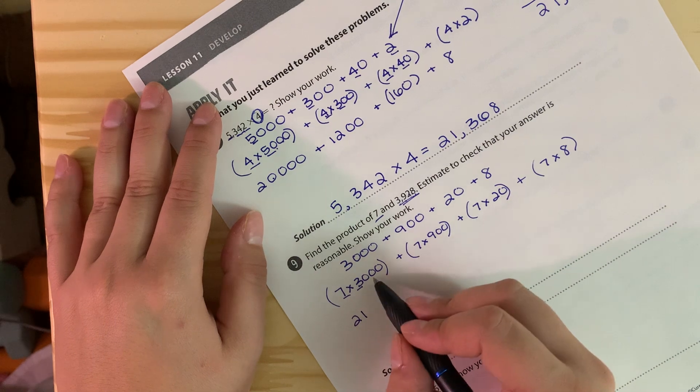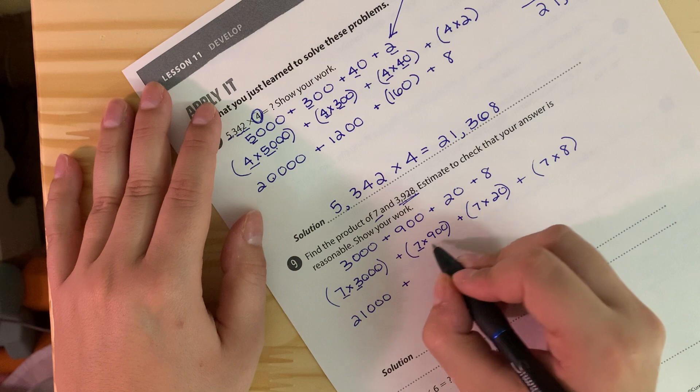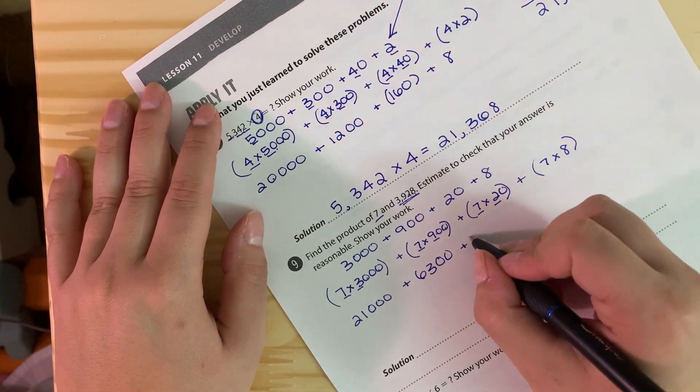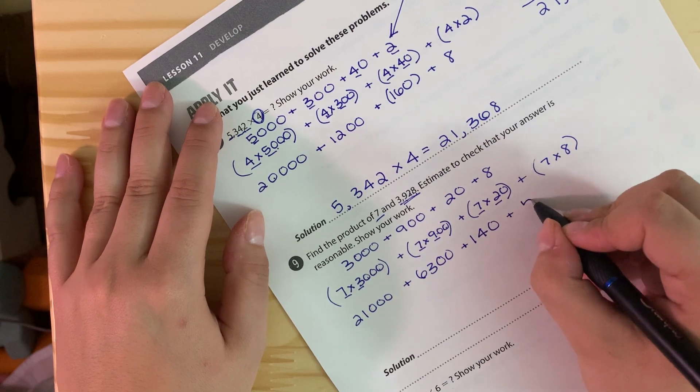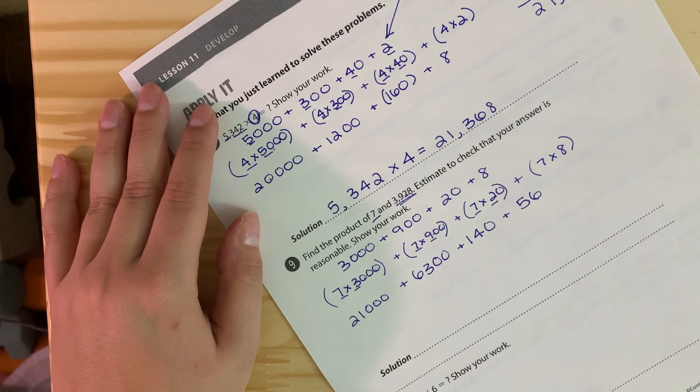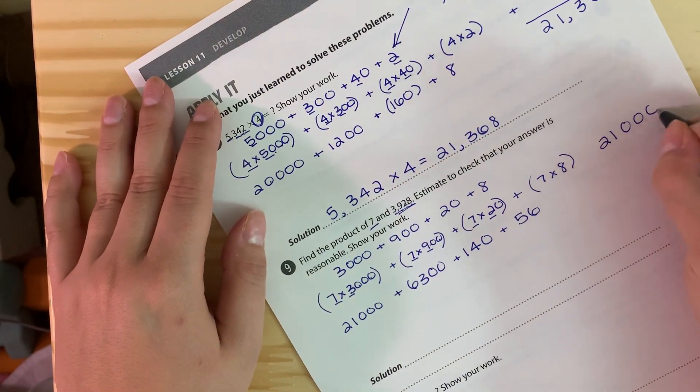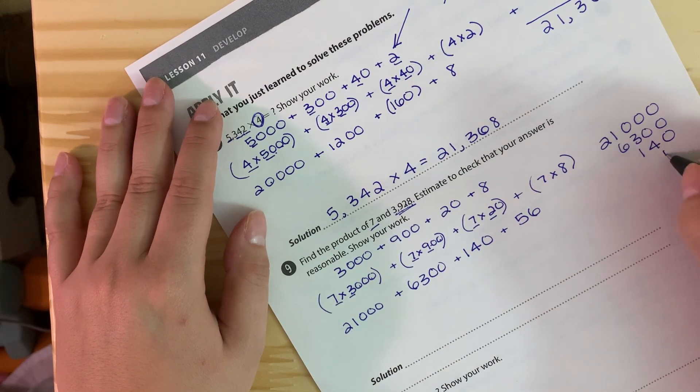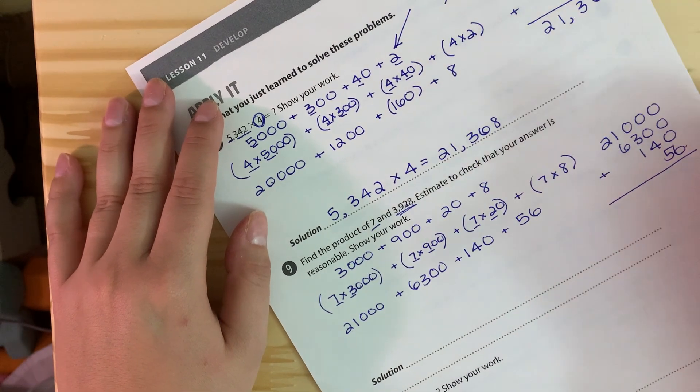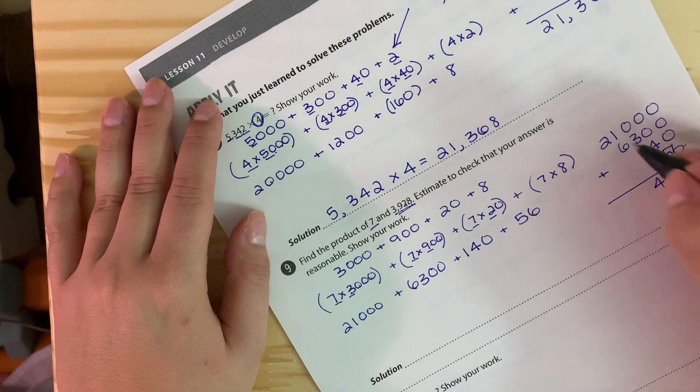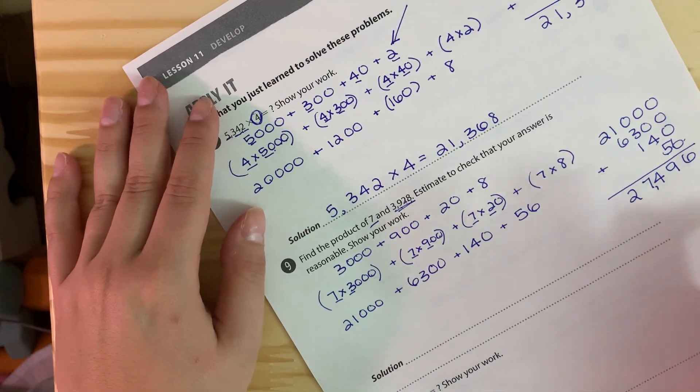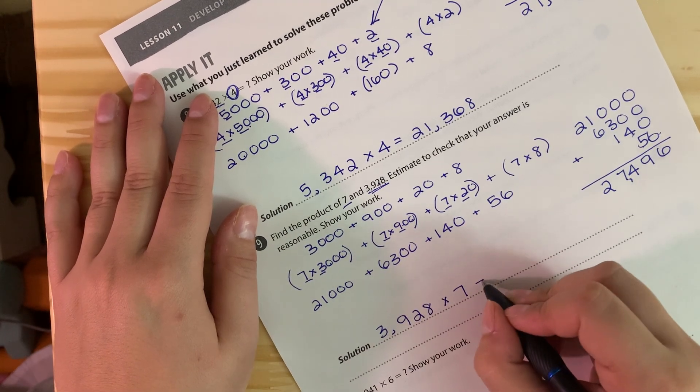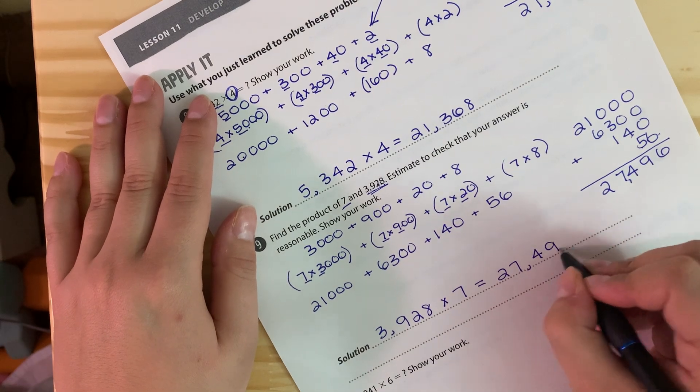So I'm going to do 7 times 3,000, 7 times 900, 7 times 20, 7 times 8, and I'm just going to plug them in. So 7 times 3 is 21, add the three zeros, plus 7 times 9 which we know is 63 and then add the two zeros, plus 7 times 2 which is 14 and add the zero, plus 7 times 8 which we know is 56. Now again we can stack it up to help us add so we don't lose any of the zeros. So we have 21,000, then we have 6,300, 140, and then 56. So our answer is 27,496. So that means that 3,928 times 7 is equal to 27,496.